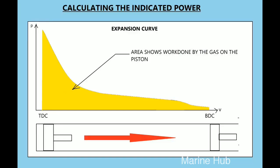In real case when the piston moves from TDC to BDC, pressure does not remain constant as shown here. The area under the graph shows the work done by the gas on the piston.